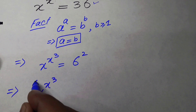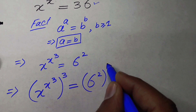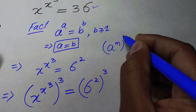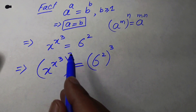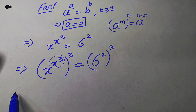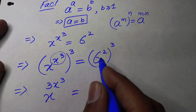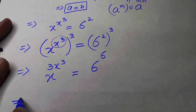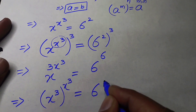We write the expression as x to the power of x, whole cubed, equals 6 to the power of 2, whole cubed. Using the rule that (a^m)^n = a^(m×n), we multiply the exponents to get x to the power of 3x³ equals 6 to the power of 6. We then rearrange the left-hand side to write it as (x³) to the power of x³ equals 6 to the power of 6.